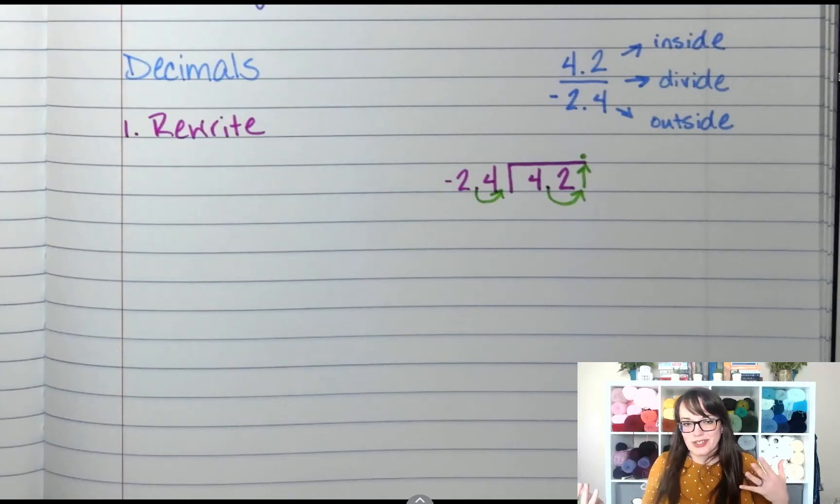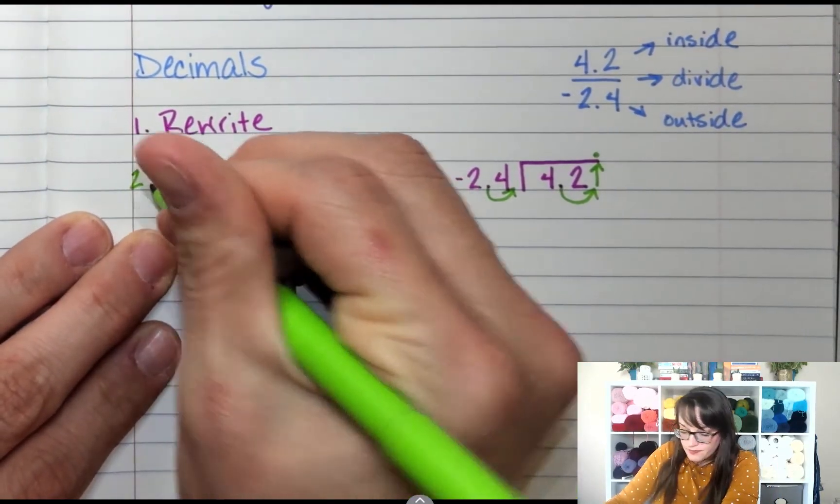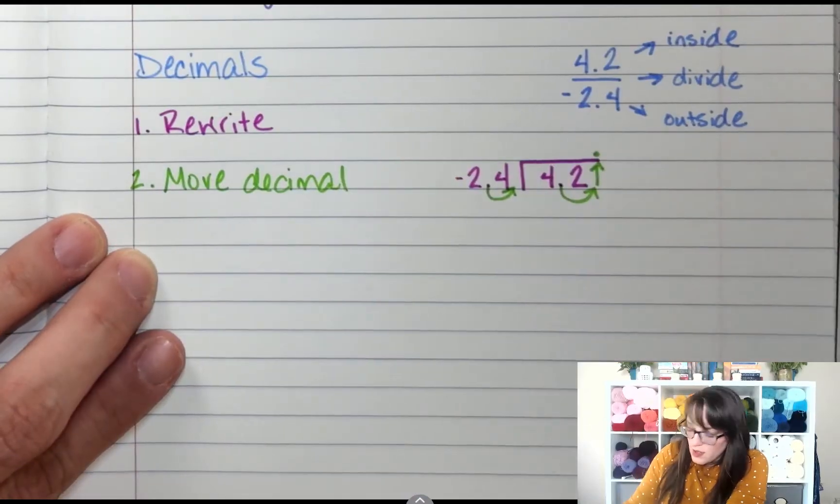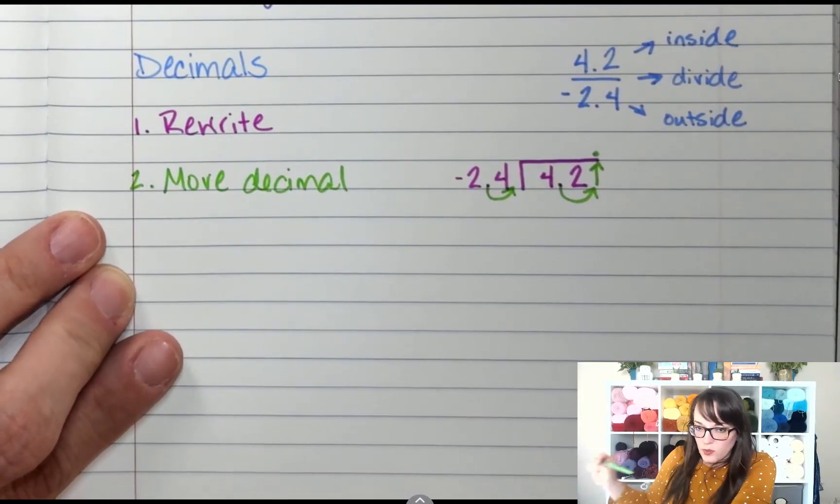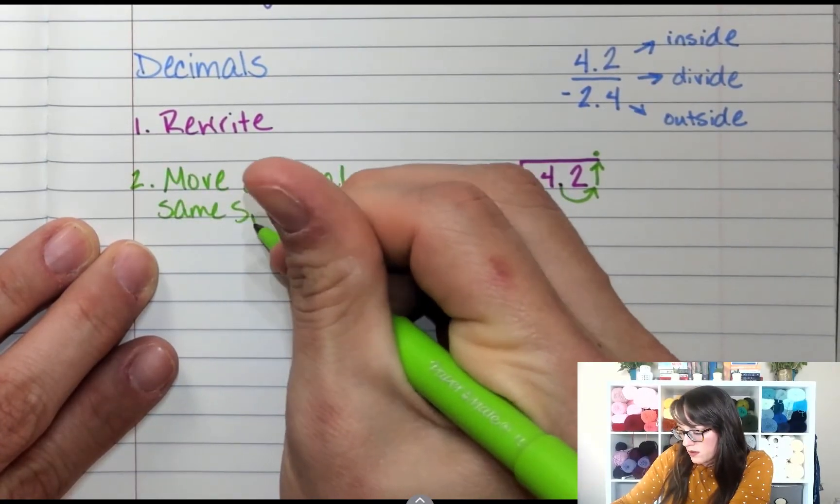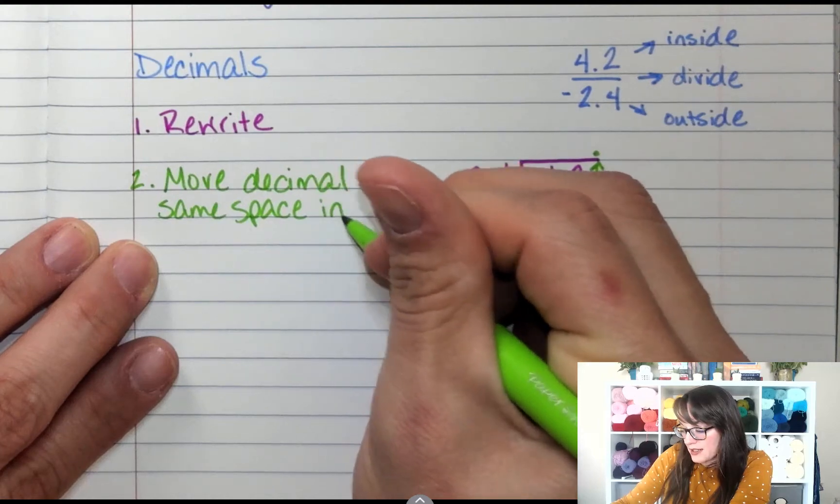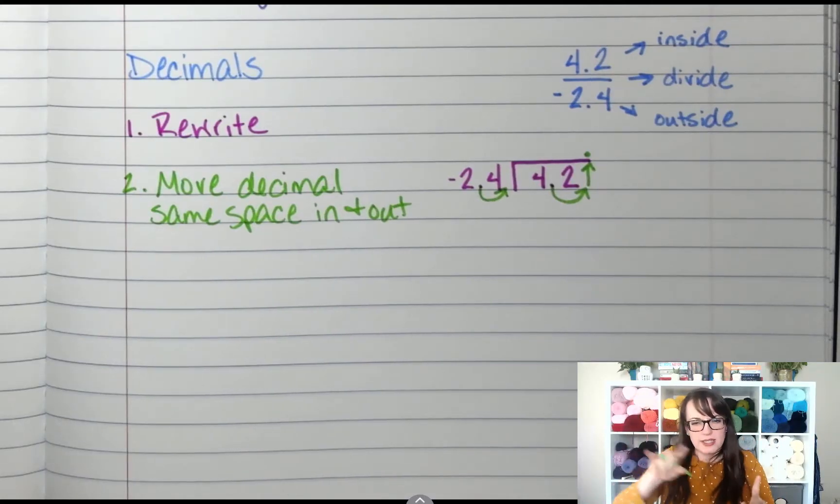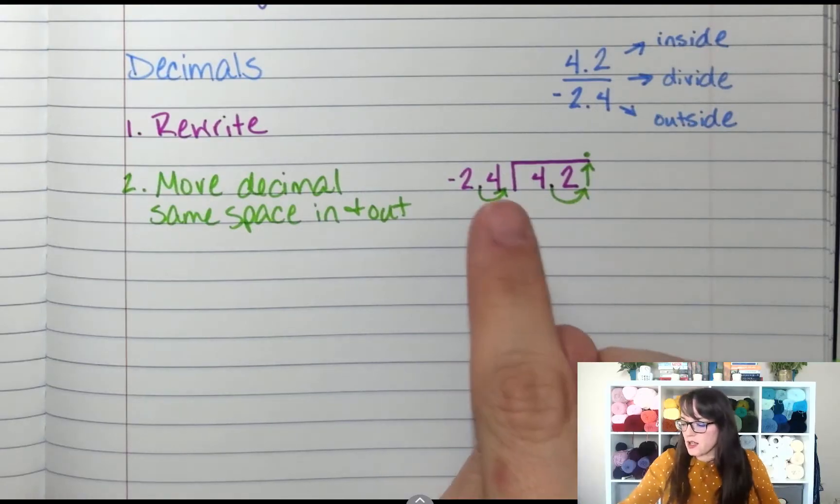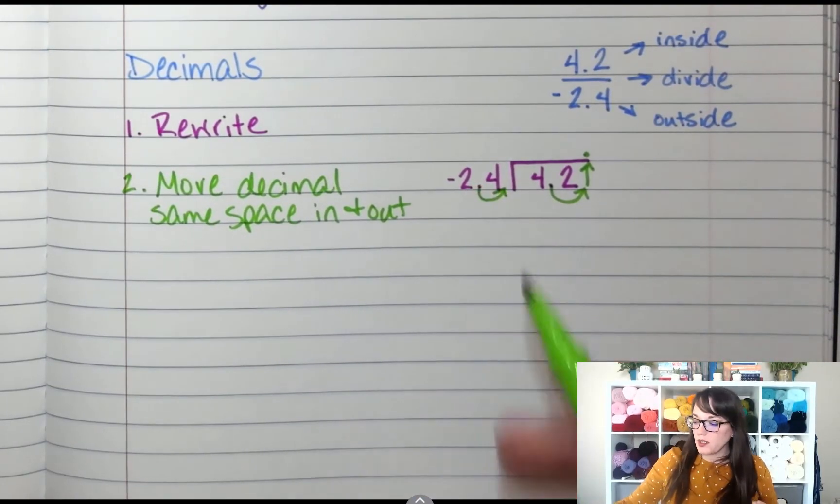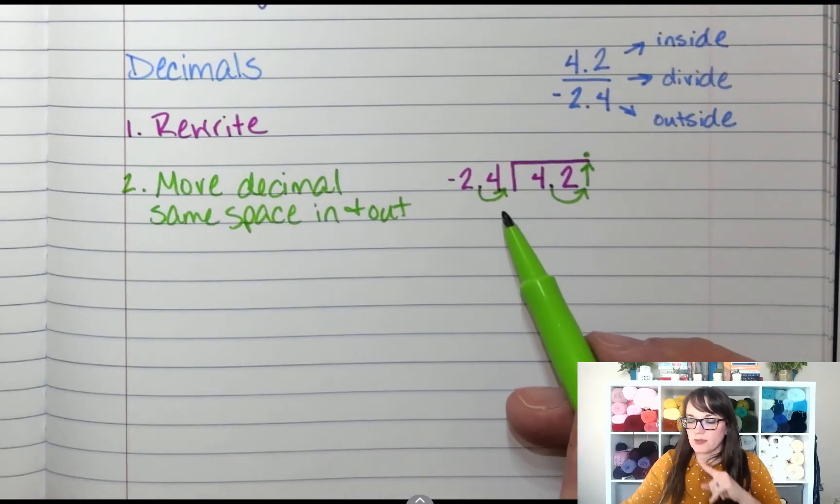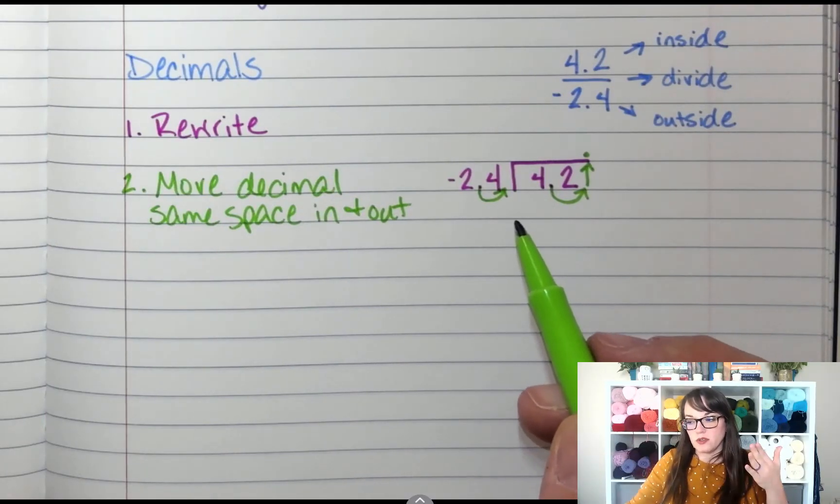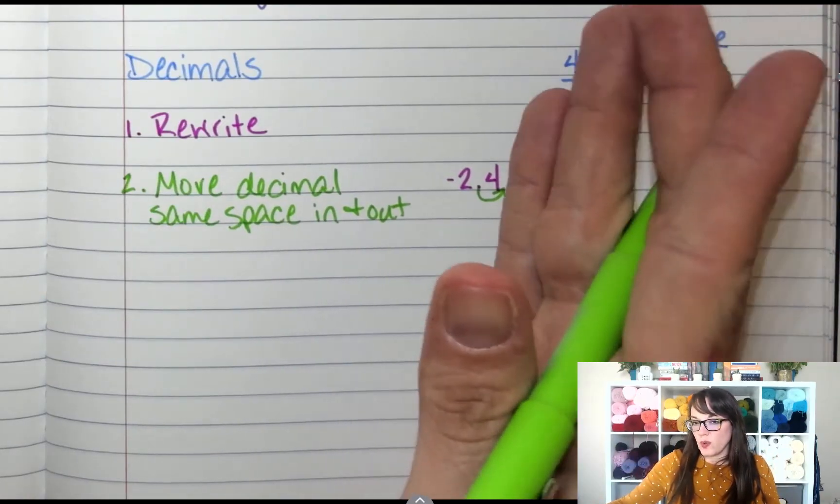We're just moving the decimal over so that it's easier to work out. Not so much easier—this is just how we do it. Okay, so step 2, I'm going to move my decimal. And however you move the outside, the inside one moves the same. I'm going to say same space in and out—so 1 and 1. I always felt like they were tied together, so they would jump the same number of spaces. The goal is to make the outside number a whole number. So if it's 2.4, that's one space. If it was 0.24, how many spaces would you have to move the decimal? You'd have to move it 2 spaces. You want to get that decimal all the way to the end of that number.